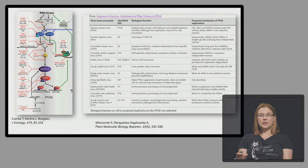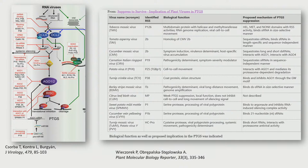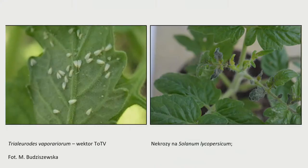Wirusy roślinne mają wielofunkcyjne białka. Roślina aktywuje proces PTGS – cięcia RNA wirusowego. Ale wirusy wykształciły zdolność, że niektóre ich białka pełnią funkcję supresorów PTGS – hamują proces wyciszania RNA na różnych etapach, robiąc to bardzo wydajnie, co pozwala im bronić się przed mechanizmami obronnymi rośliny.